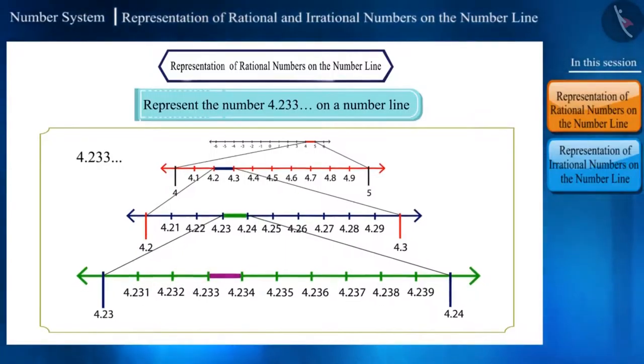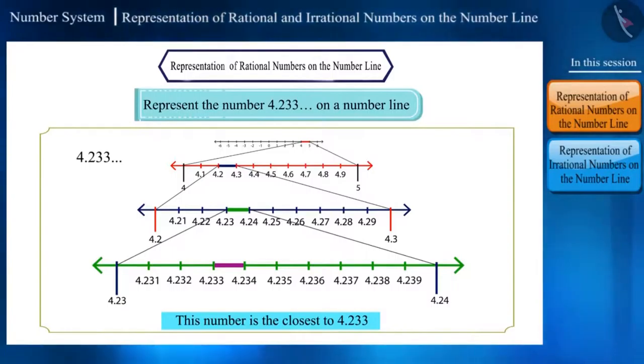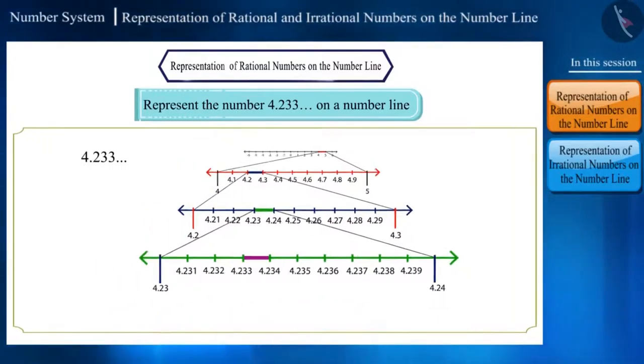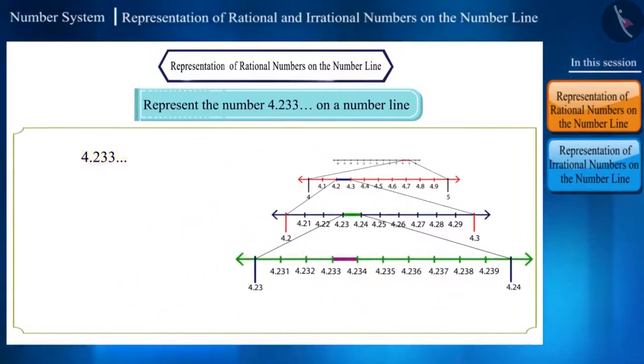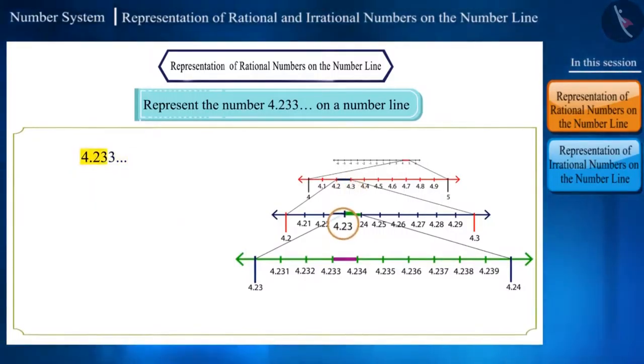If we notice the process, as we are moving ahead and dividing the parts, we are getting closer to the given numbers. Here we can say that, though we cannot accurately locate the given number on the number line, we can still represent its closest value. So, representing any number on the number line depends on how many numbers after the decimals are to be considered while representing them.